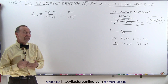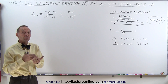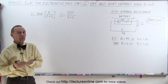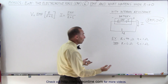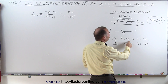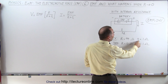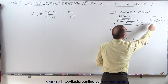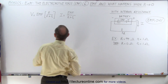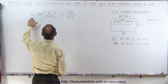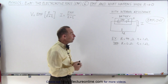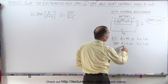Welcome to ElectronLine. In this video, we're going to allow the resistance of the circuit itself to go to zero. We're going to do an example. We're going to start off with a normal example where the initial resistance of the circuit is 99 ohms, and then we're going to allow the circuit resistance to go to zero.